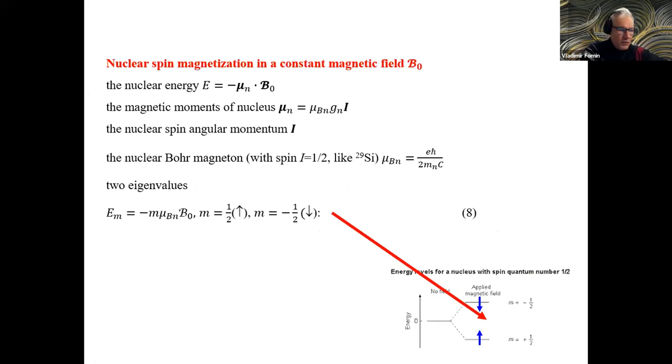Now a few words about nuclear spin magnetization. Again, the same Hamiltonian with the magnetic moments of a nucleus already with a plus here gives two eigenvalues in case if our nucleus has spin one-half. In this case, already lower level is with nuclear spin up, and higher level with nuclear spin down.